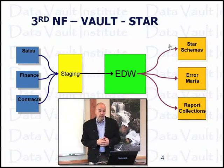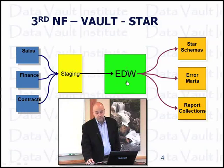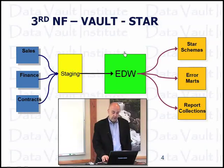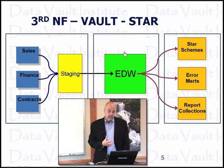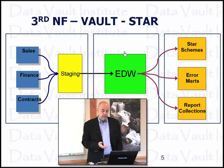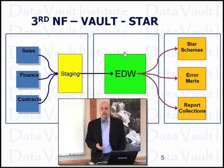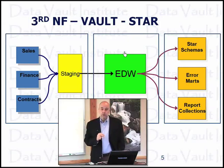If we look at the broader picture, as we move data from operational systems to staging, staging to an enterprise data warehouse format, and into the data marts, we see this breakout of third normal form in that first box. Staging could be pretty flat as well — third normal form. Enterprise data warehouse is vault, and then we get into star schema.